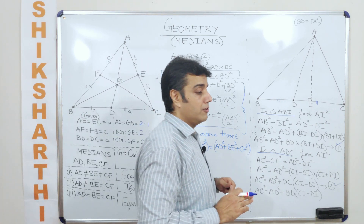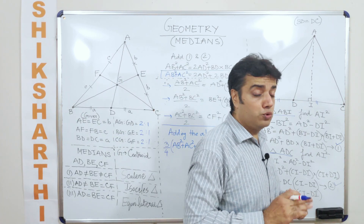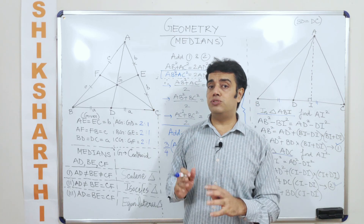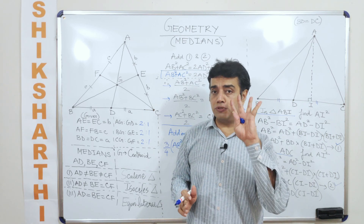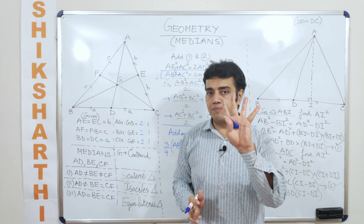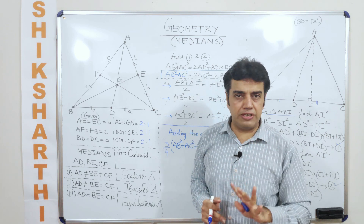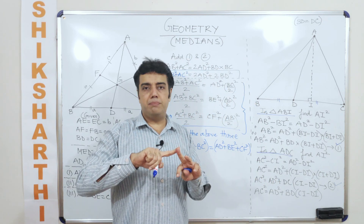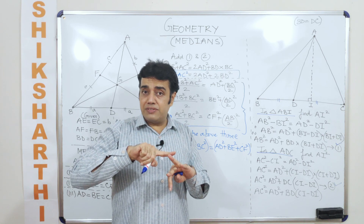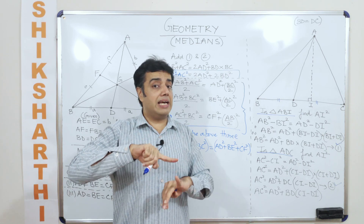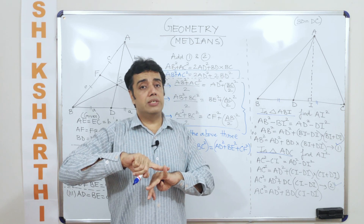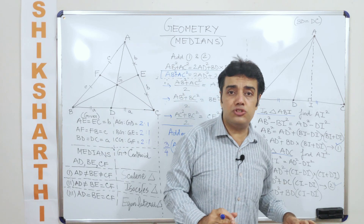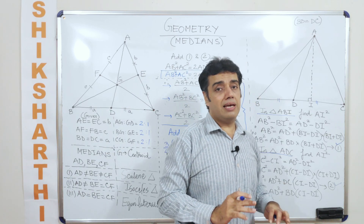Remember, we can use all these things not only in triangles but in quadrilaterals also. Remember these four points: P for perpendicular, P for parallel, S for similarity, and C for congruency. These are going to help you a lot in geometry.